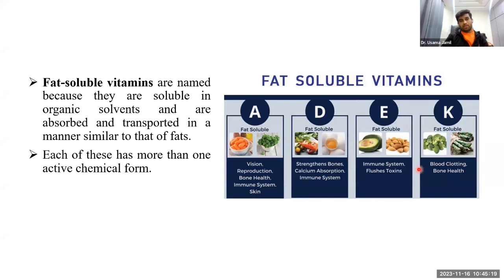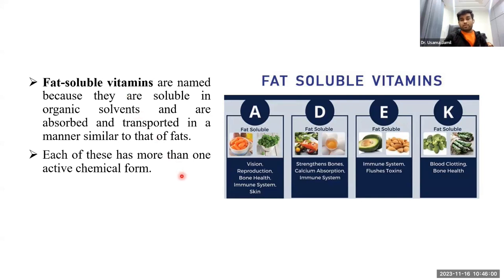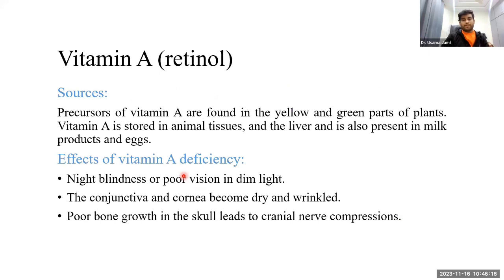Fat-soluble vitamins are named so because they are soluble in organic solvents and are absorbed and transported similarly to fats. Each fat-soluble vitamin has more than one active chemical form — when taken in food or supplement form, the vitamin undergoes chemical changes, converting from inactive to active forms.